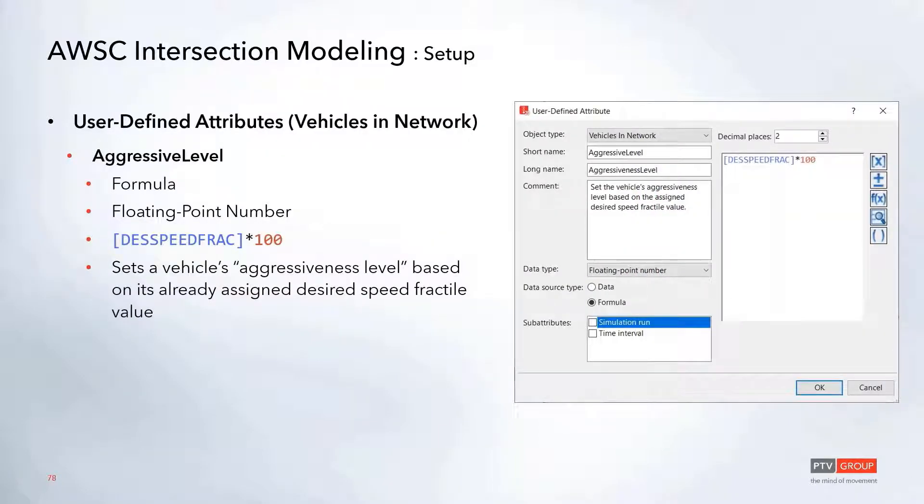As far as the user-defined attributes go, the first one here is defined for the vehicles in the network. This one is going to essentially create an aggressiveness level for each vehicle that will be based on the desired speed fractile value that gets assigned to the vehicles as they enter the network. This is going to be used in case two vehicles arrive at the stop signs at the exact same time, and this will prioritize the vehicles where the more aggressive vehicle will end up going before the less aggressive vehicle. This was just a way where we could simplify that all-way stop behavior without having to try to define different directions and figure out which vehicle is on the right side of that vehicle.